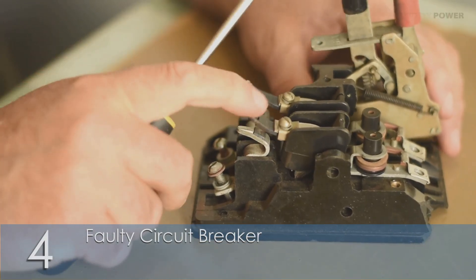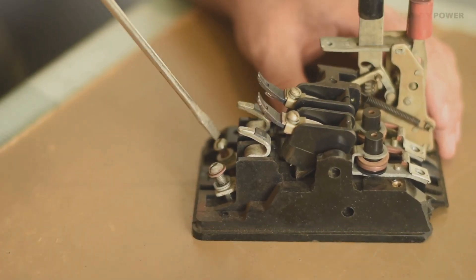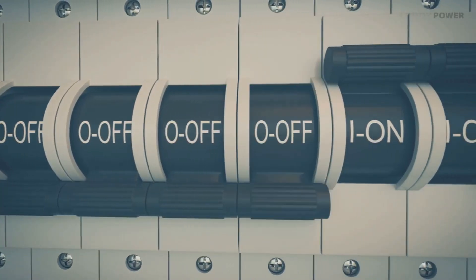Number four, faulty circuit breaker. Breakers, like any other electrical components, can wear out over time. Worn breakers might trip without a valid reason.